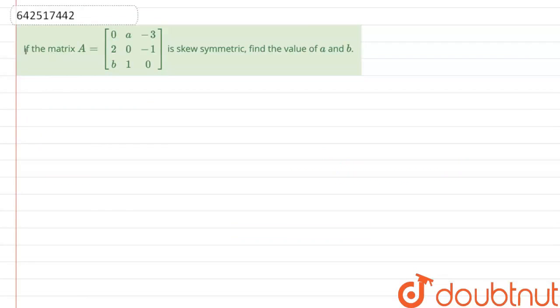Hello everyone, let's start the question. The question says, if the matrix A is equal to 0, A, -3, 2, 0, -1, B, 1, 0 is skew symmetric, find the value of A and B.